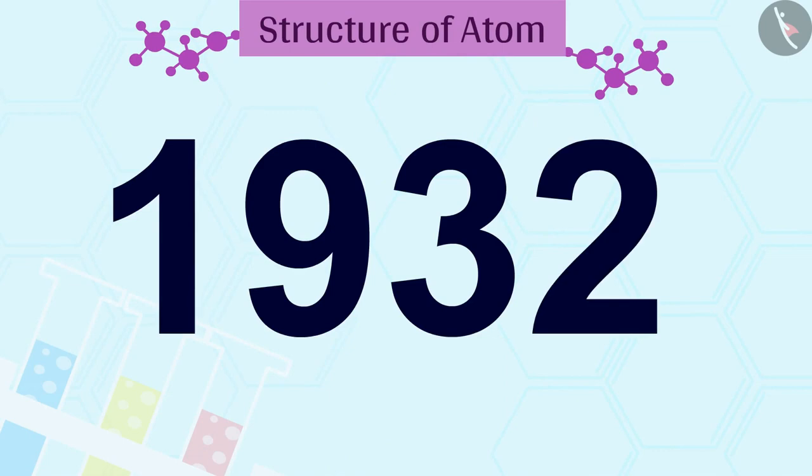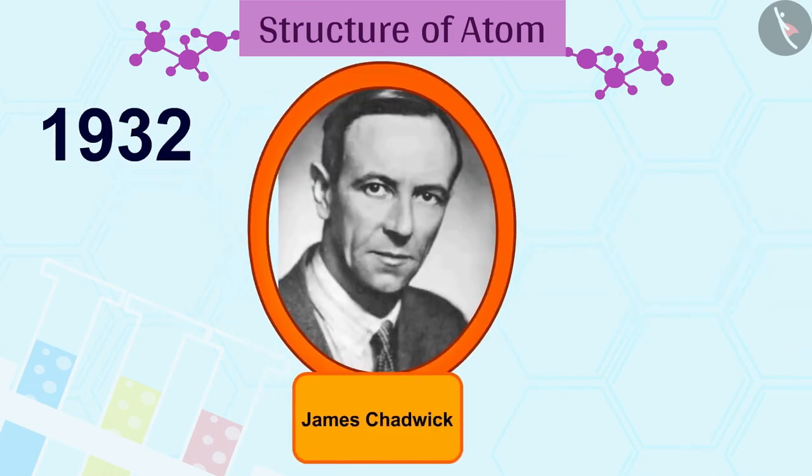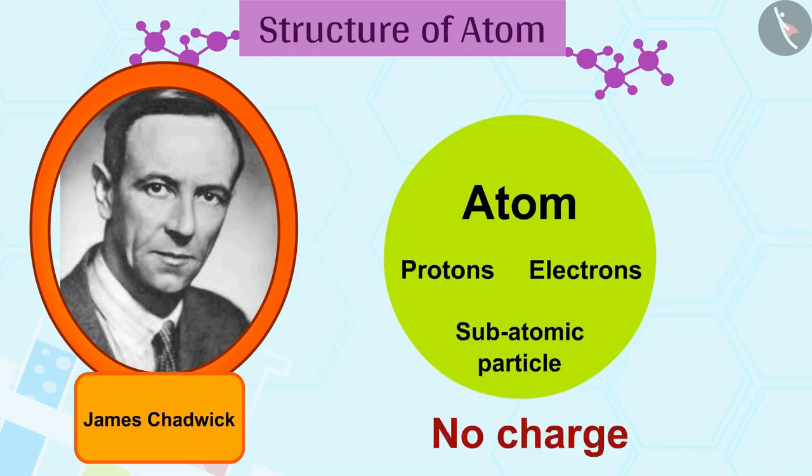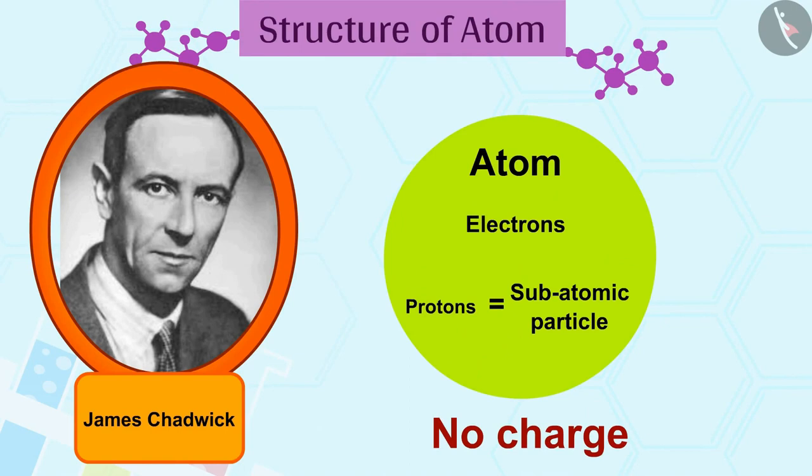In 1932, J. Chadwick discovered another subatomic particle which had no charge and a mass nearly equal to that of a proton. It was eventually named as neutron.